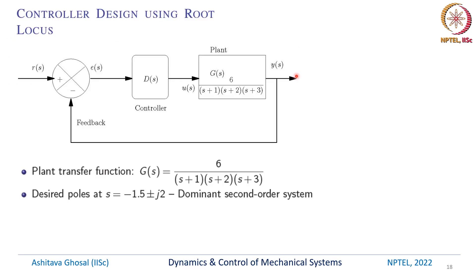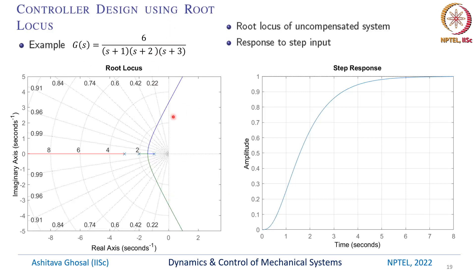Now let's look at a slightly more complicated system. The plant transfer function is 6 divided by (s+1)(s+2)(s+3). This was also one of the plants discussed earlier in the state space approach. The input is U(s), output is Y(s), and we have a controller. The goal in this example is to design a controller such that the desired closed-loop poles are at s = -1.5 ± 2j — these are the desired dominant second-order poles.